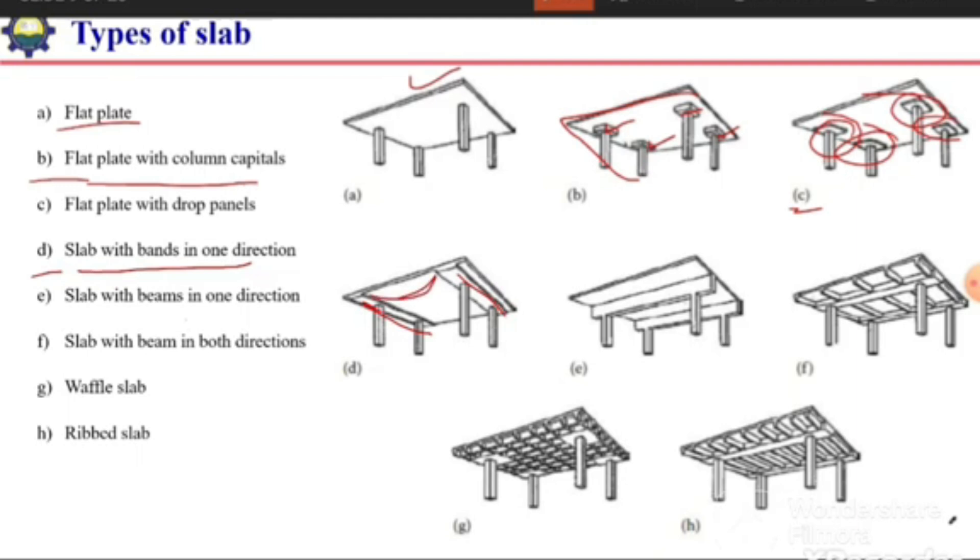The next is slab with beams in one direction, then again it will be considered as one-way. We can have slab with beams in both directions as in figure f. We can have primary beams running along the line of the columns and we can have secondary beams which are resting on the primary beams.